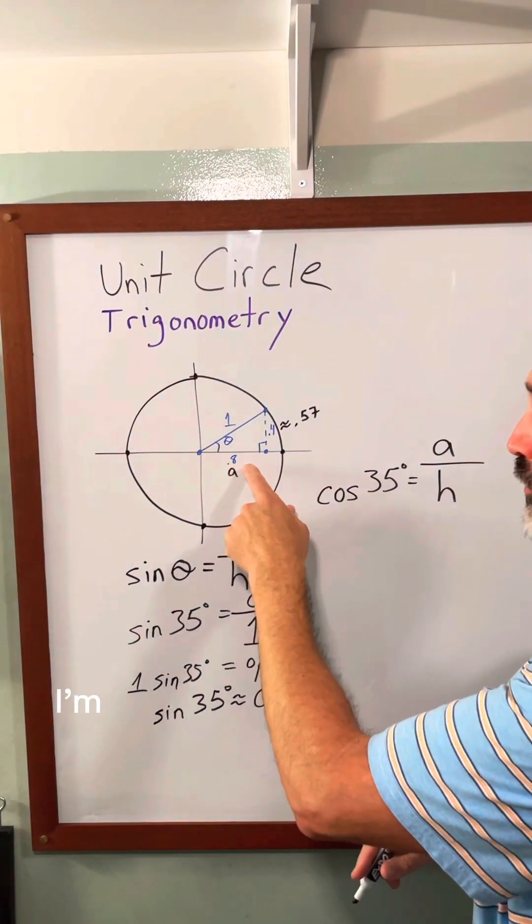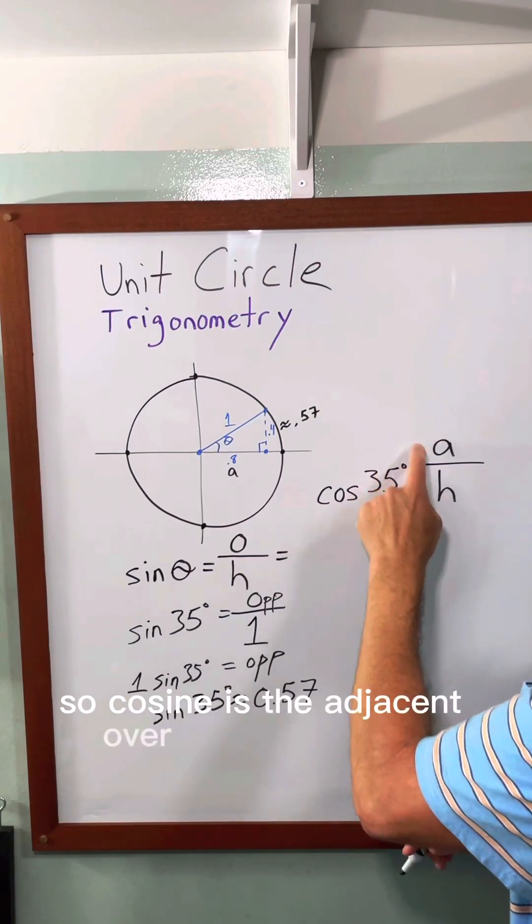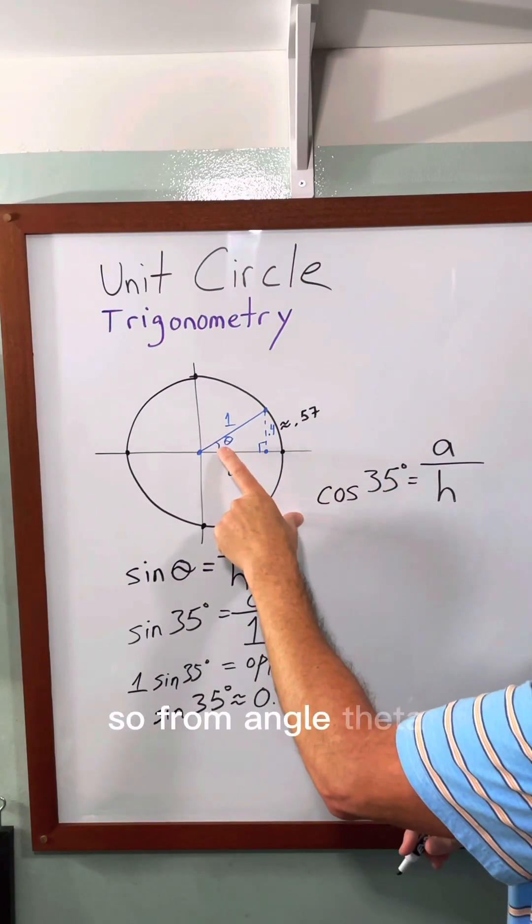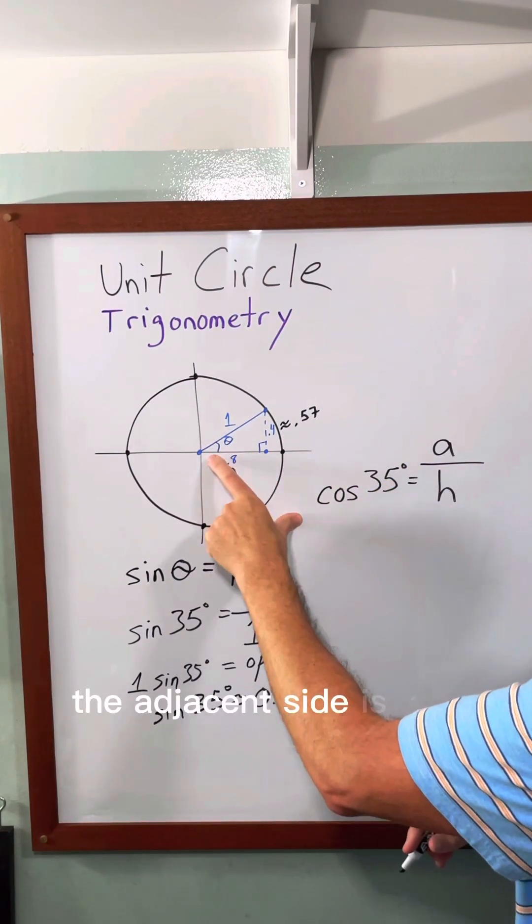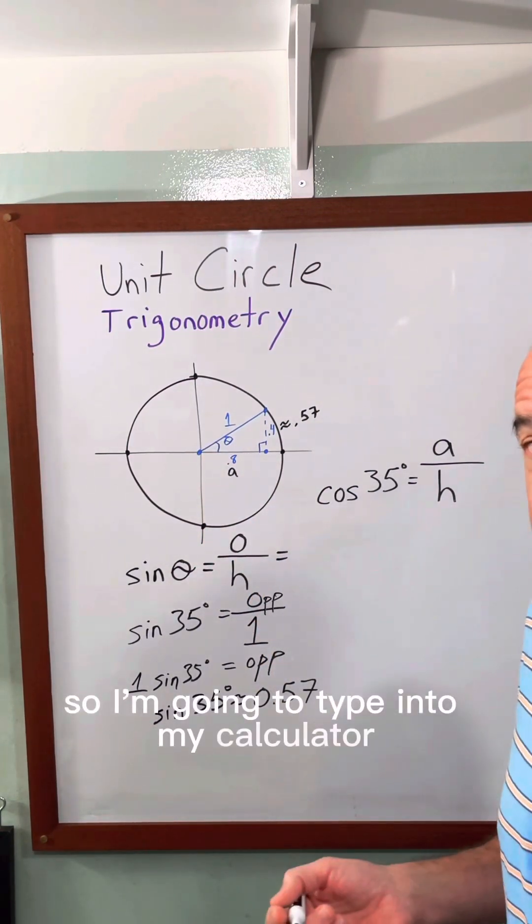Now it's the same thing for the cosine. I'm trying to see what the length of this side is. So cosine is the adjacent over the hypotenuse. From angle theta, the adjacent side is the one touching that central point. So I'm going to type into my calculator. Remember the hypotenuse is still 1.